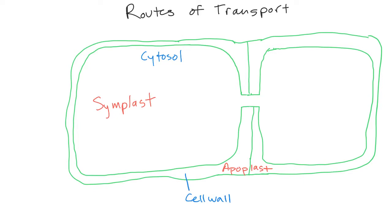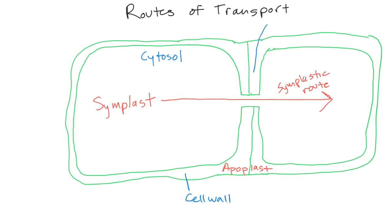If it goes from the cytosol of one cell to the cytosol of the next, this is called the symplastic route. But in order to do that, it has to go through this connecting structure. That connecting structure is called plasmodesmata. So the symplastic route goes through the plasmodesmata from one cell to the other.